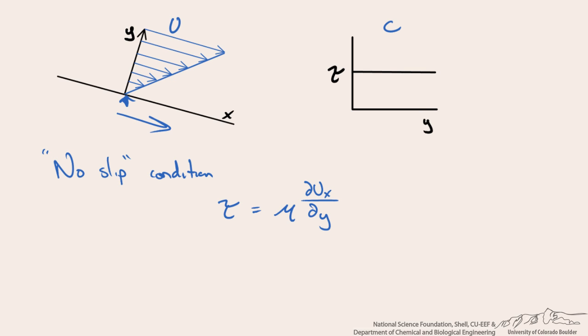Now the viscosity is constant as a function of the rate of shearing strain. So we say that this is not a function of the rate of shearing strain for Newtonian fluid.